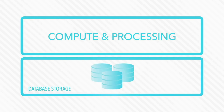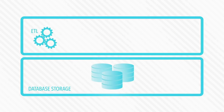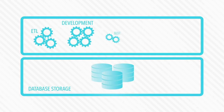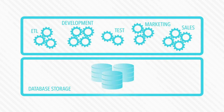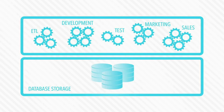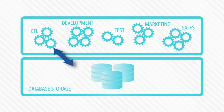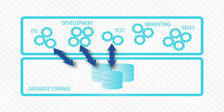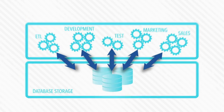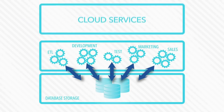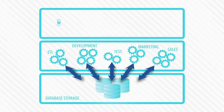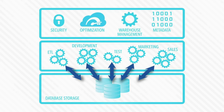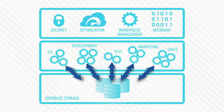The compute layer is comprised of virtual warehouses — compute resources that execute data processing tasks required for queries. The virtual warehouses have access to all the data in the storage layer. The cloud services layer coordinates the entire system, managing security, optimization, and metadata.